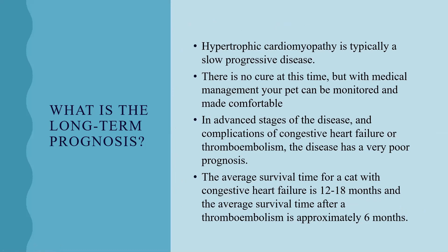The long-term prognosis reflects a very slow, progressive disease with no cure at this time, though medical management can keep patients monitored and comfortable. In very advanced stages, complications such as congestive heart failure or thromboembolism result in a very poor long-term prognosis. Animals diagnosed with congestive heart failure are typically given one to one and a half years, and the average survival time for an animal with a thromboembolism is approximately six months. Each patient should be assessed individually, with all health factors taken into consideration.